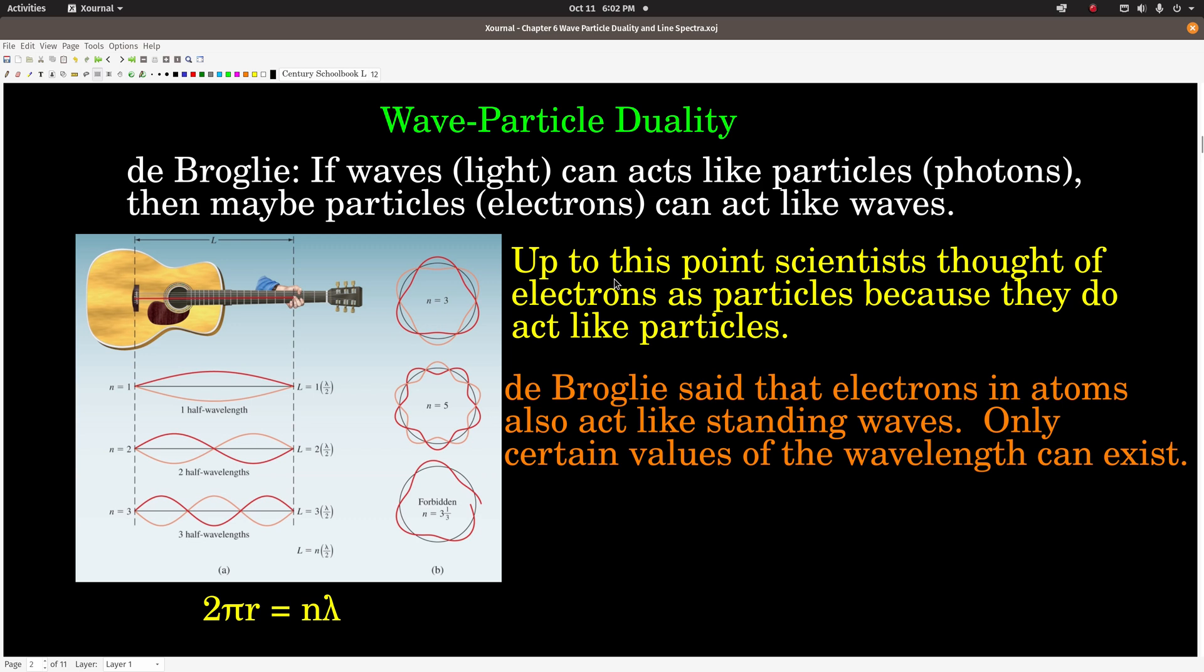which we know acts like a wave, can also act like a particle, because it can act like a photon, that's the photoelectric effect, and a wave, that's constructive and destructive interference. Then maybe particles, and he was thinking in particular about electrons and atoms, can act like waves, because up to this point, scientists thought about electrons as strictly particles, because they certainly do act as if they are particles. And de Broglie said that, well, what if the electrons and atoms also act like standing waves?